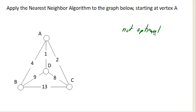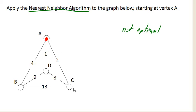The way the nearest neighbor algorithm works — and this is our first heuristic — is we pick a starting point. So let's go ahead and use A as our starting point. At every point along the way, we move to the nearest, or cheapest, unvisited vertex. So we look and say: what are my choices? I can either go to B, to D, or to C. This path has a cost of 4, this path has a cost of 1, this path has a cost of 2. I like cheap, so I'm going to go down to D, taking the cheapest route.